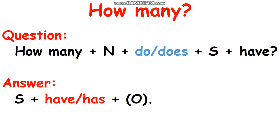We use 'how many' when we want to know the number or amount of something. The question form is: 'how many' plus noun plus 'do' or 'does' plus subject, plus 'have'. We use 'do' when the subject is I, you, they, or we, and 'does' when the subject is he, she, or it. I hope you still remember how to use 'do' and 'does'.